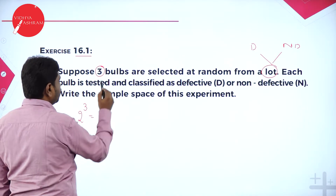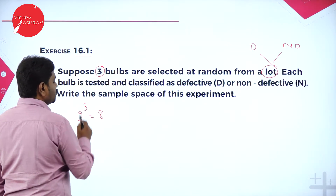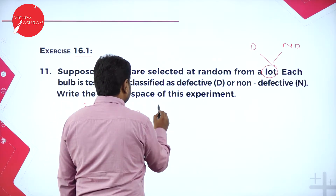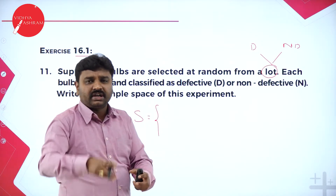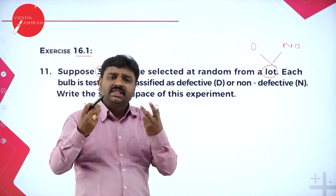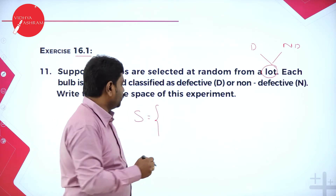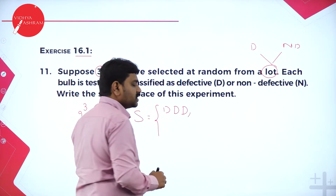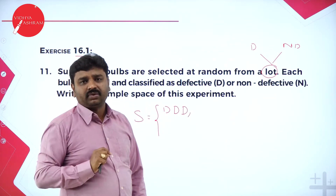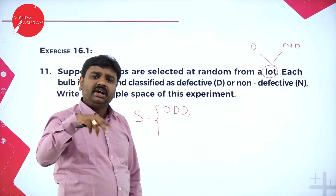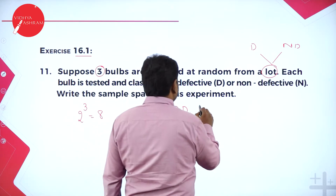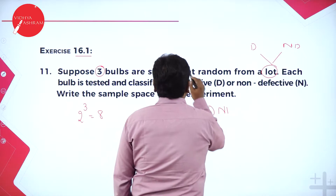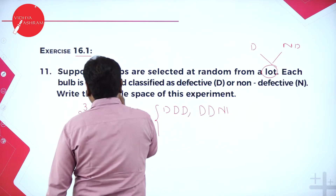What are the eight possible outputs? I take three bulbs from the lot. All three may be defective: D, D, D. That is one possibility. Or only one may be defective and the remaining two non-defective. Let D stand for defective and N for non-defective, as given.